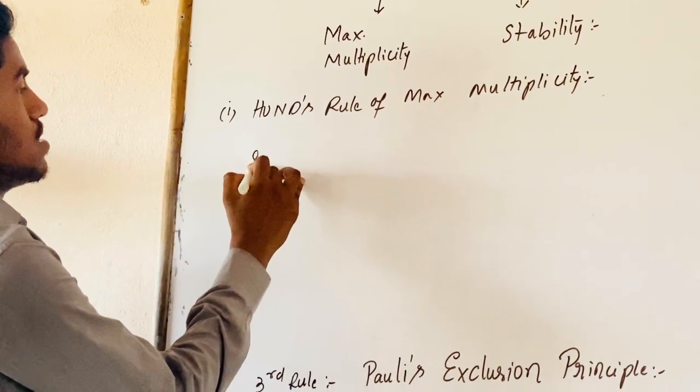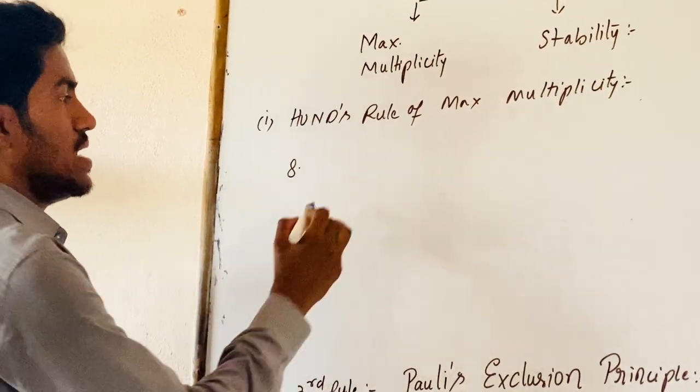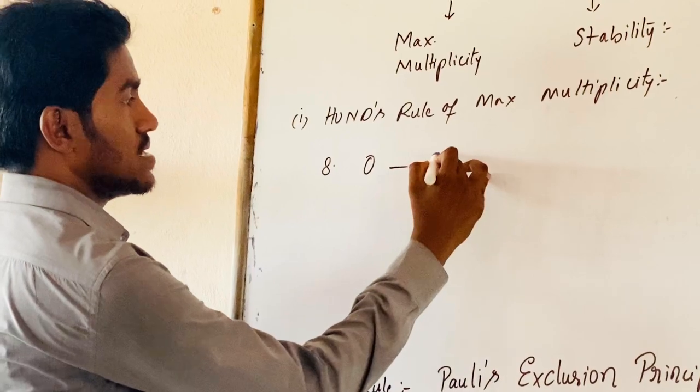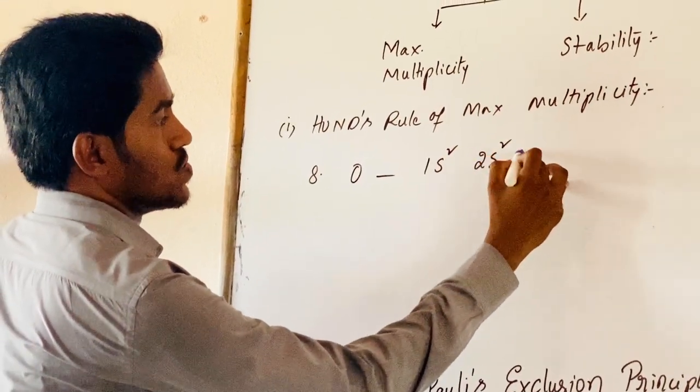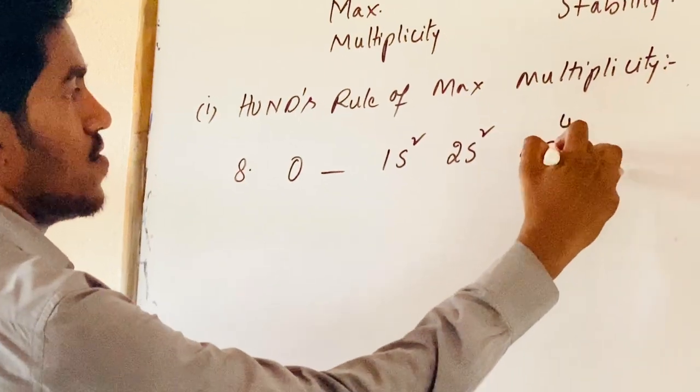While taking an example with atomic number 8, the element is oxygen. The electronic configuration is given as 1s2, 2s2, 2p4.